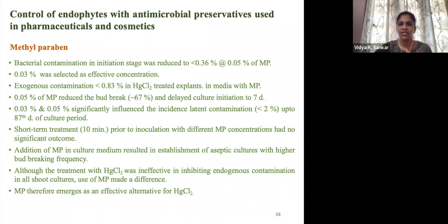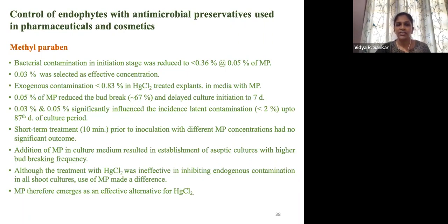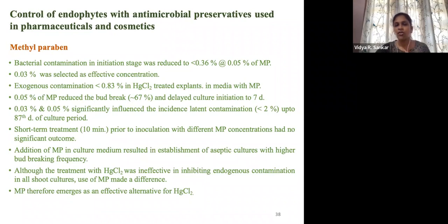Other chemicals selected for contamination control are preservatives commonly used in pharmaceuticals and cosmetics, such as methylparaben. We found that 0.03% of methylparaben is very effective and can be used as an alternative for mercury chloride. It can be used in two ways: the same way as mercury chloride treatment, or we can add it to the media itself. Three chemicals selected from these categories are methylparaben, benzoyl fluoride, and thimerosal. Thimerosal and methylparaben can be used as additives in the media and the media can be reused for the next stages also.